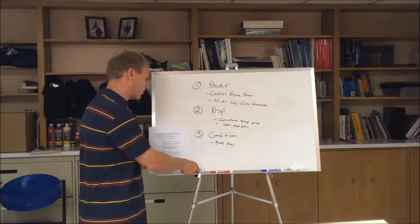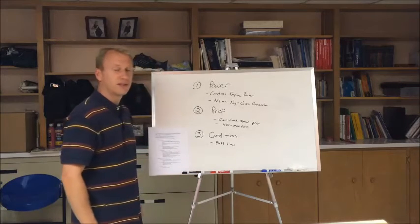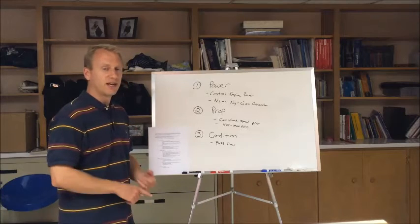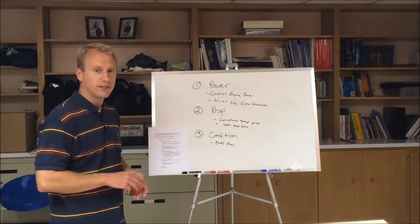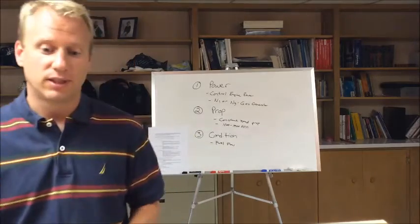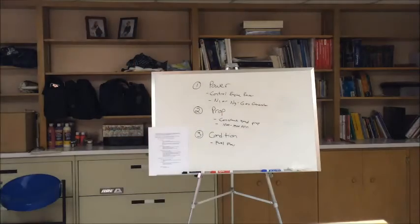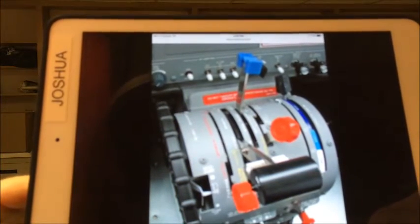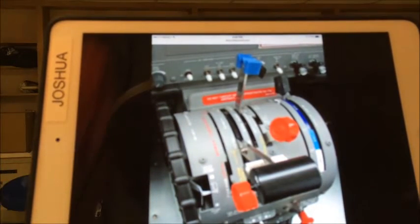The condition lever has three positions: high idle, low idle, and cutoff. I'll show you a picture now of a power quadrant from the Cessna 208 Caravan, which is a single-engine turboprop. Obviously, if you have a multi-engine, you would have double levers for each control.